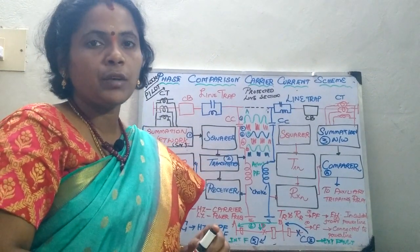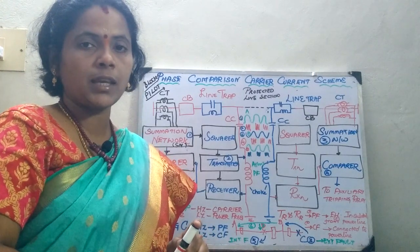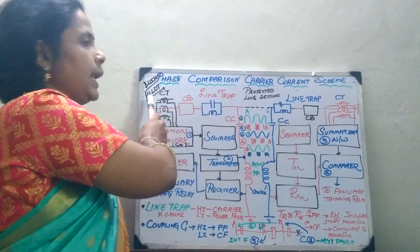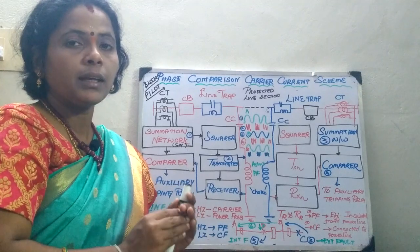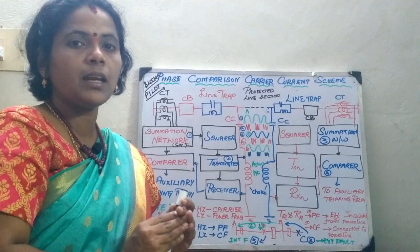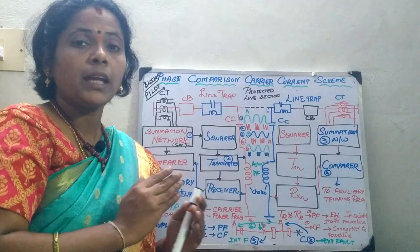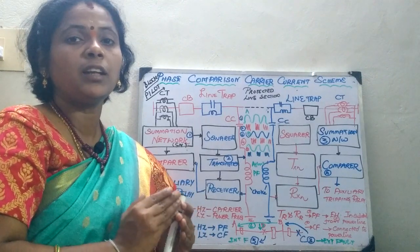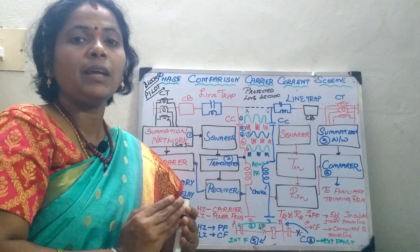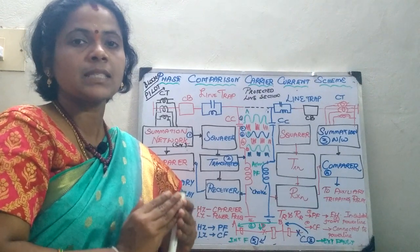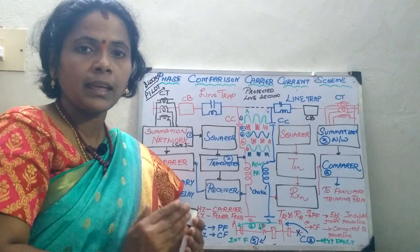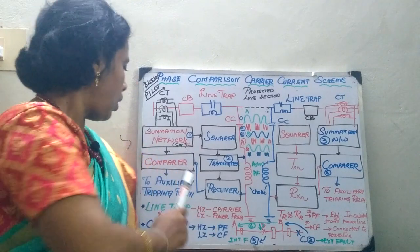We have seen that the phase comparison scheme acts as a blocking pilot. That means if the carrier signal is present, it is going to prevent the tripping of the relay. Only when the carrier signal is not there will the relay operate.